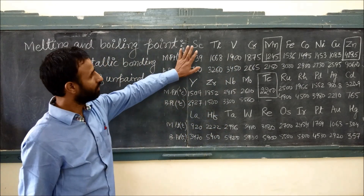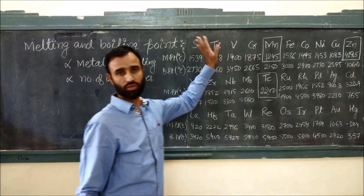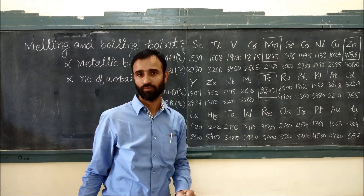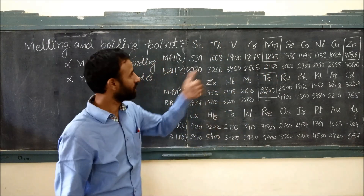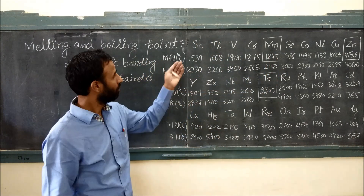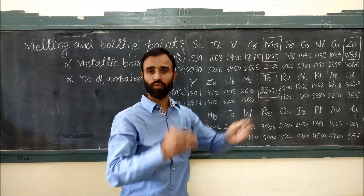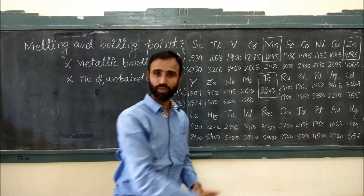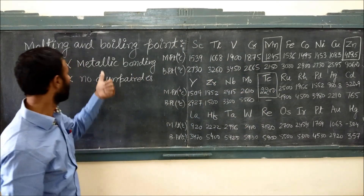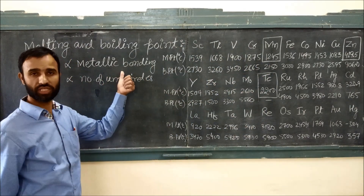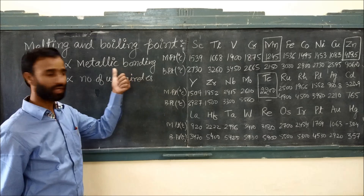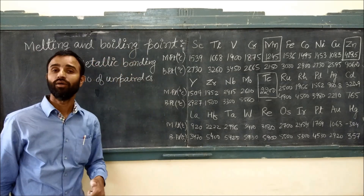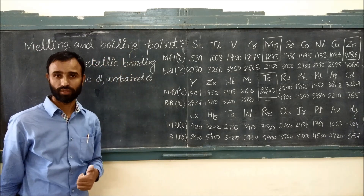So let us discuss the first transition series. In the first transition series, up to the midpoint, the number of unpaired electrons increases, so metallic bonding increases, and so do the melting and boiling points.